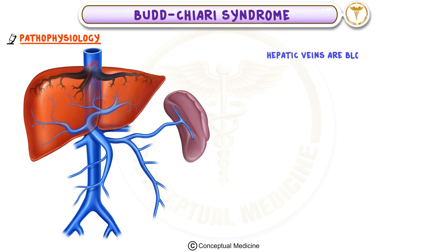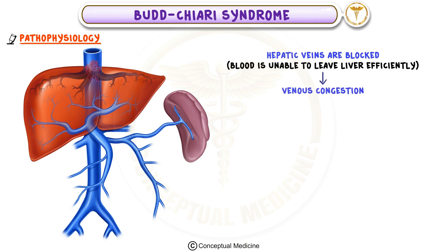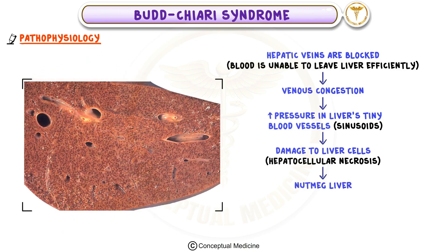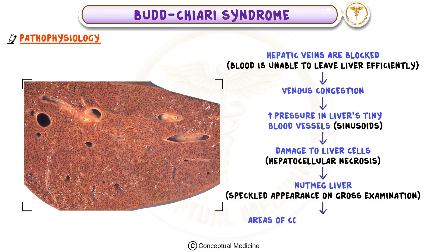When the hepatic veins are blocked, blood is unable to leave the liver efficiently. This leads to venous congestion, which increases pressure in the liver's tiny blood vessels called sinusoids. Over time, this increased pressure causes damage to liver cells, known as hepatocellular necrosis, and can result in what we call a nutmeg liver — a term referring to the characteristic speckled appearance of the liver on gross examination, caused by areas of congestion interspersed with normal tissue.